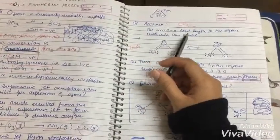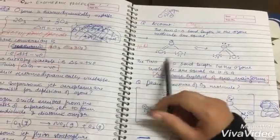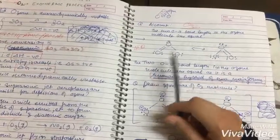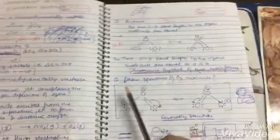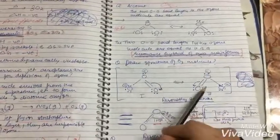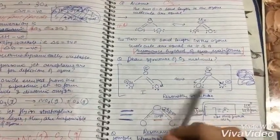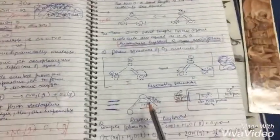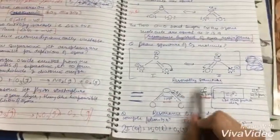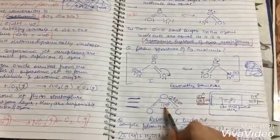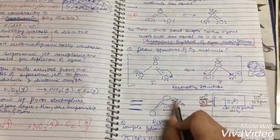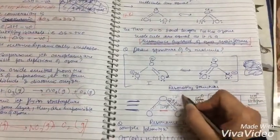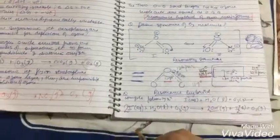To account that O to O bond lengths in ozone molecules are equal: both of them are made. Resonance hybrid of two main forms. Draw the structure of O3 molecules, both of them are resonating structures with plus and minus signs. It is important to write which bond angle is 117 degrees and bond length is 128 pm.